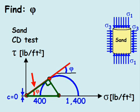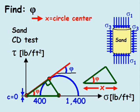The friction angle is this interior angle in the triangle. We make a copy of the triangle and define x as the distance from the origin of the graph to the center of the semicircle.